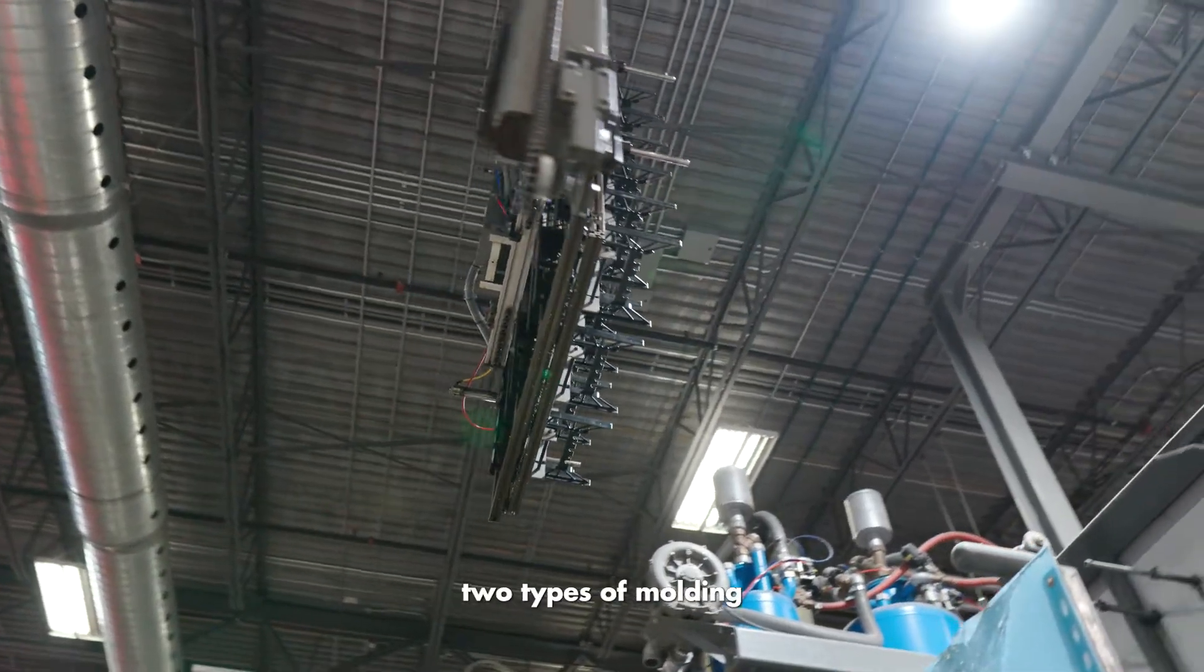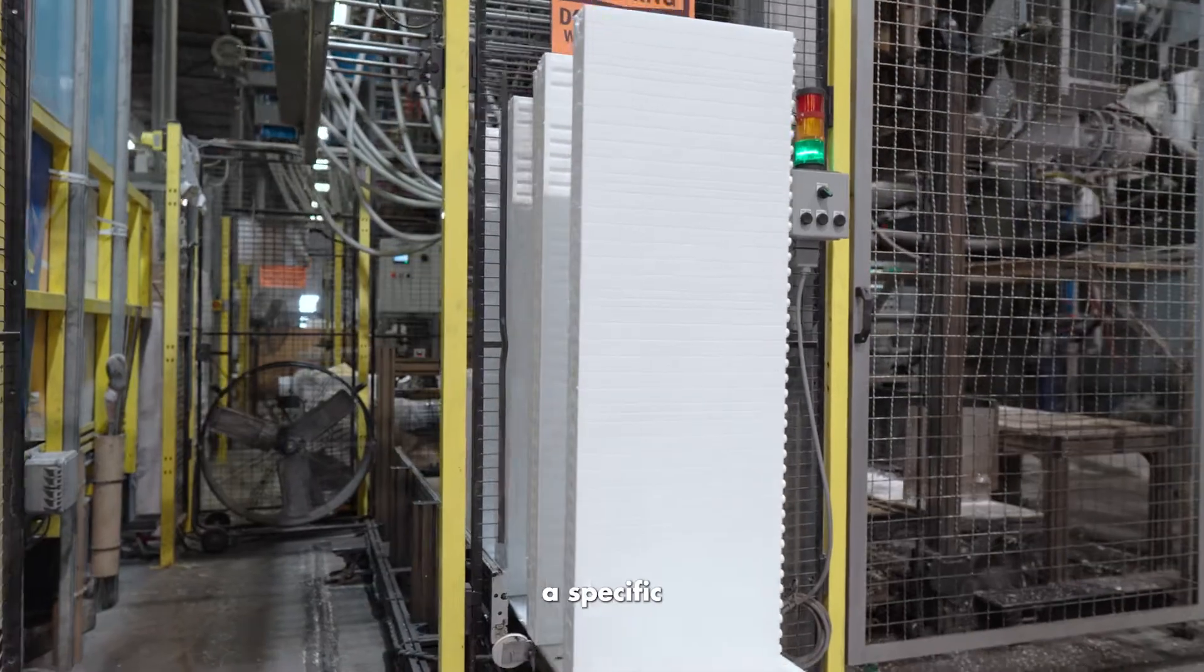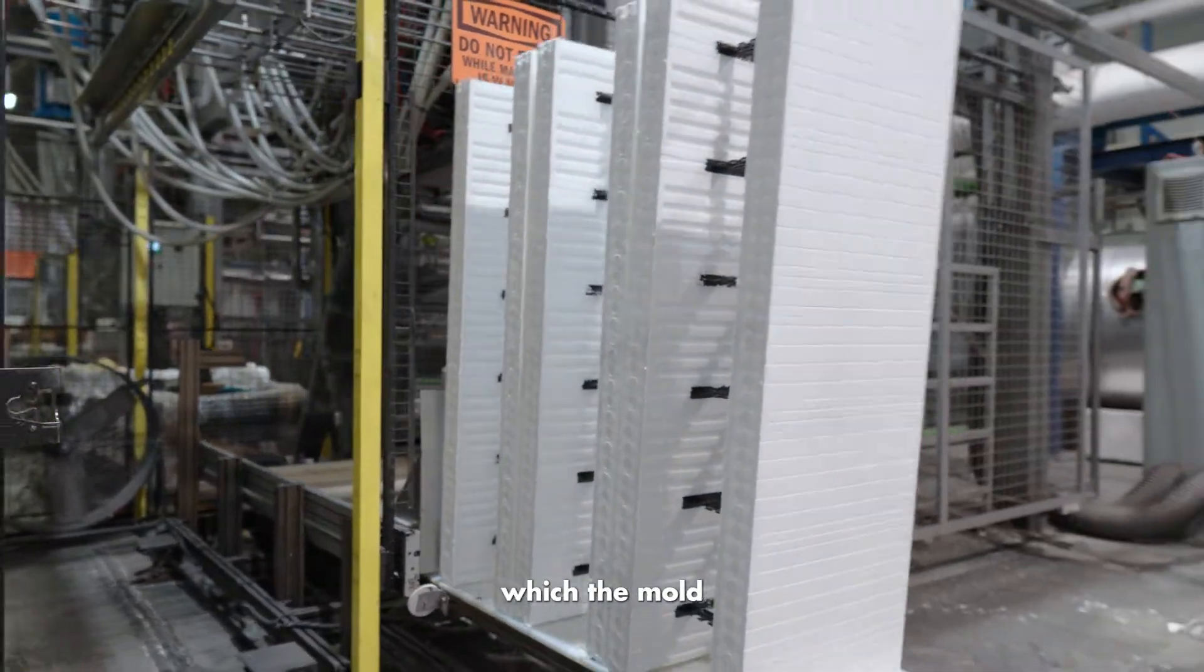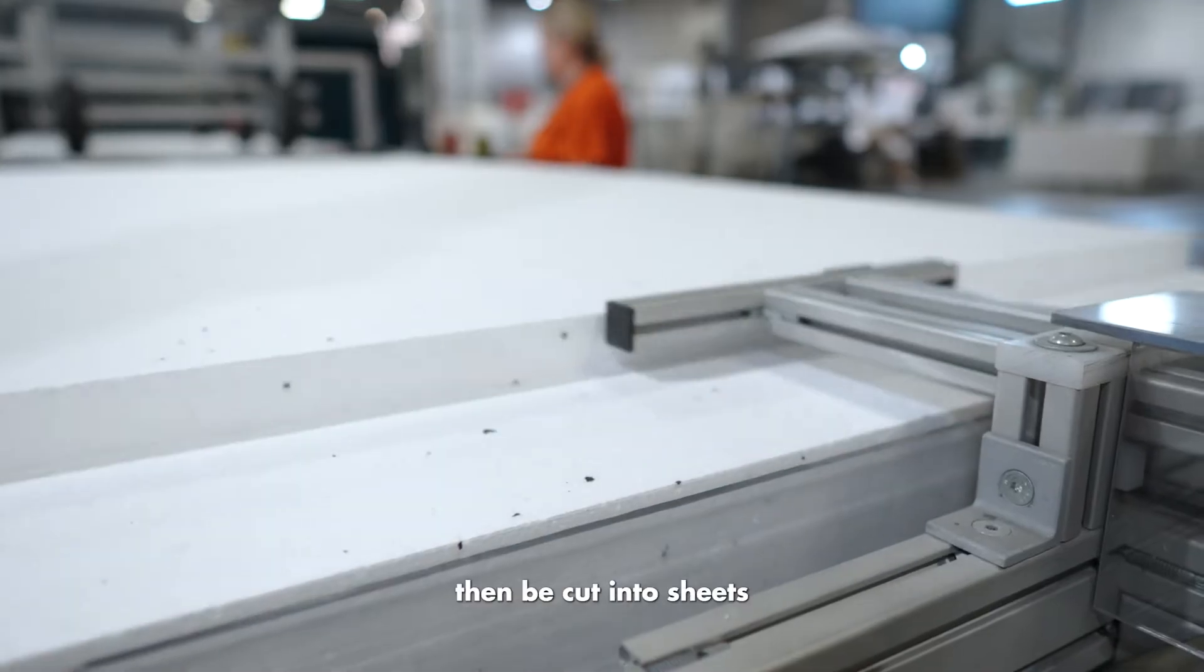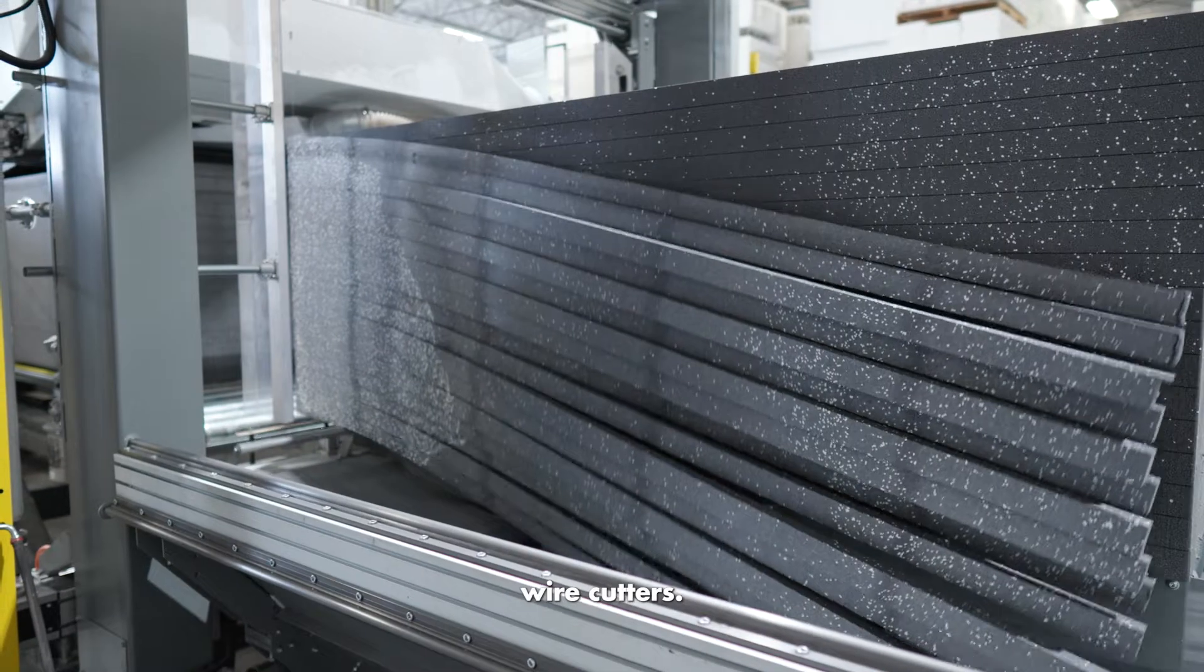The main difference between the two types of molding: shape molding creates a specific predefined shape which the mold was designed for, while block molding creates a large uniform block which can then be cut into sheets and shapes on wire cutters.